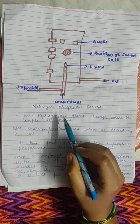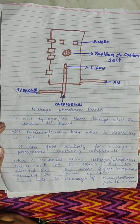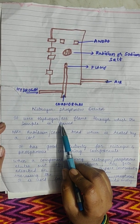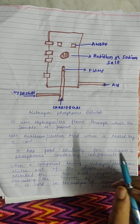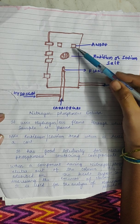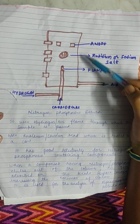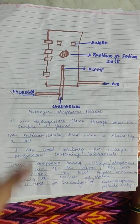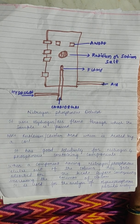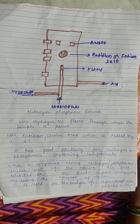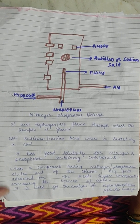The second detector is the nitrogen phosphorus detector (NPD). It also uses a hydrogen-air flame through which the sample is passed. It uses a rubidium, cesium, or sodium salt crystal bead heated by a coil. This detector is very selective — it is only useful for nitrogen- and phosphorus-containing components and will not give proper results for other components.